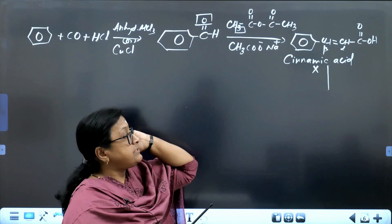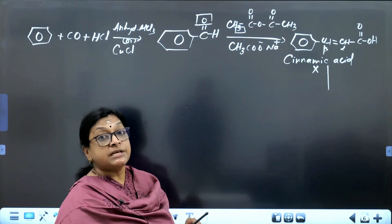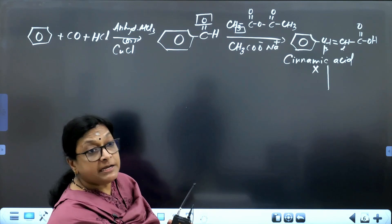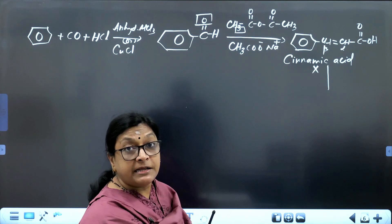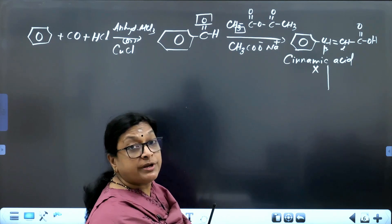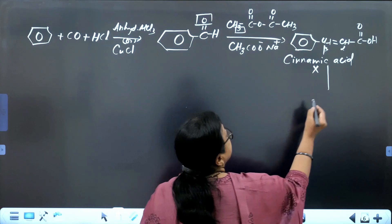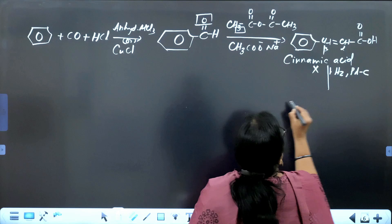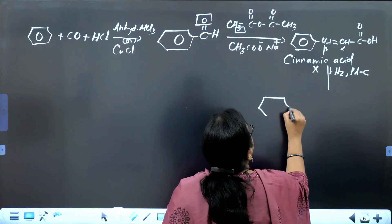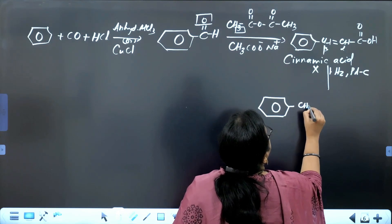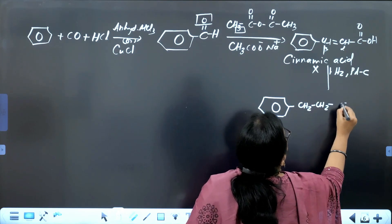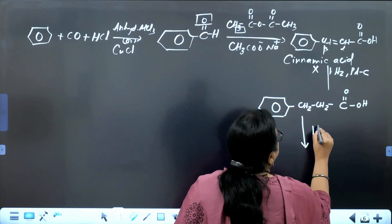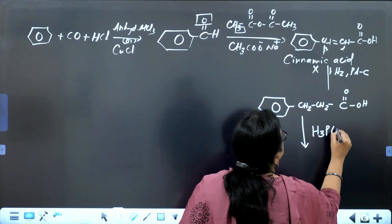Now for compound Z: X is treated with hydrogen on palladized carbon, which saturates the double bond to give a saturated compound. The product formed is Ph–CH₂–CH₂–COOH (3-phenylpropionic acid), followed by heating with H₃PO₄ (orthophosphoric acid).